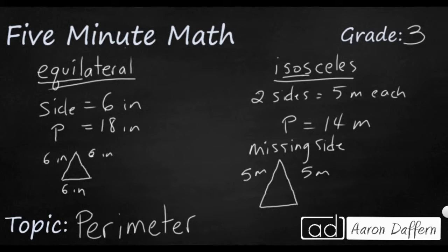The whole perimeter is 14. Well, so far I've got 10. So I've got 10, take that away from 14, and that's going to leave me with four. So this is going to have to be four meters. That's my missing side. So if it's an isosceles triangle, and they give you the measurement of the two congruent sides, you can use that to find the measurement of the missing side length.